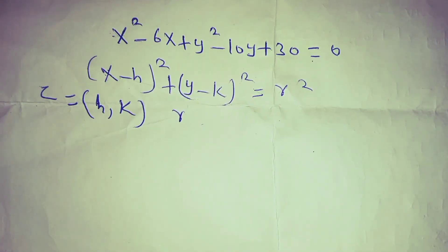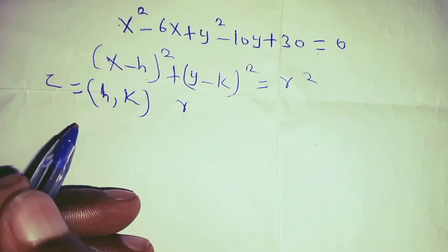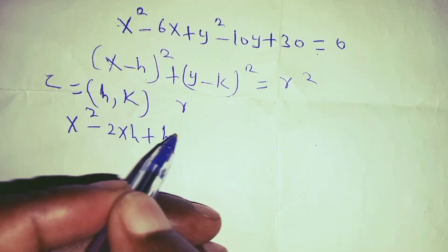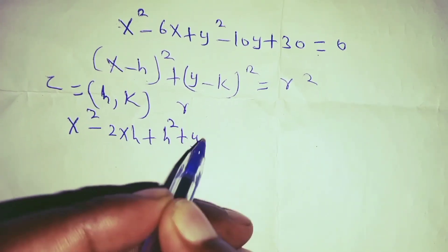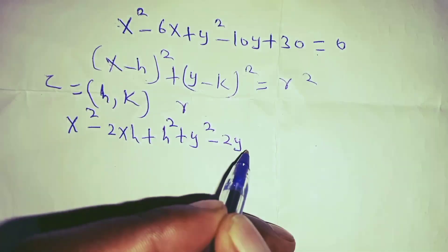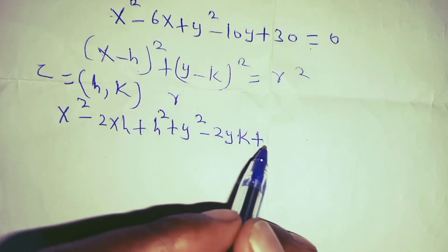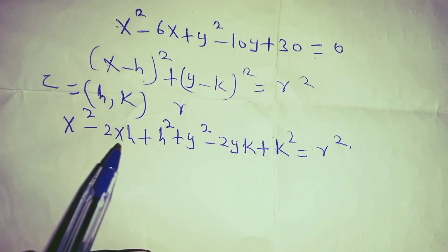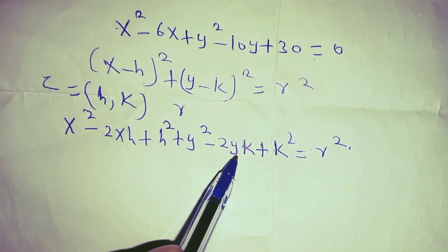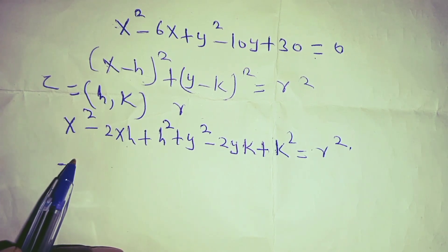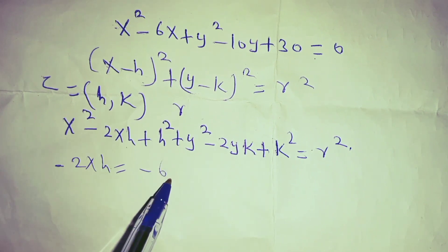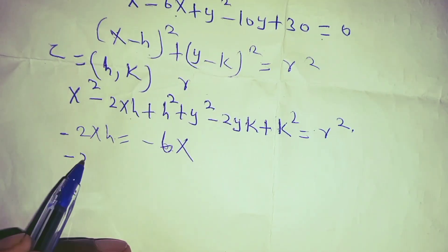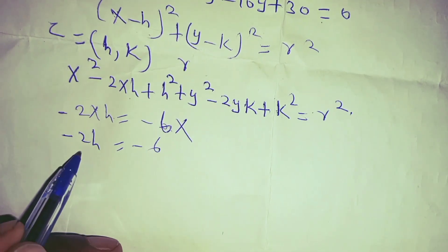There are two ways in which you can obtain the center and the radius. The first way is expanding the equation so that you have x squared minus 2xh plus h squared plus y squared minus 2yk plus k squared equals r squared. Then you compare the coefficient of x and the coefficient of y. Comparing the coefficient of x: negative 2xh equals negative 6x, so x cancels and negative 2h equals negative 6.